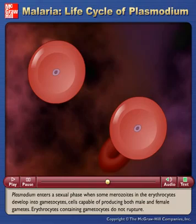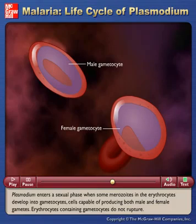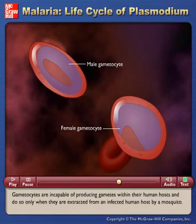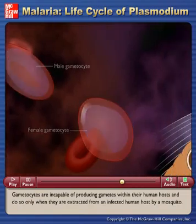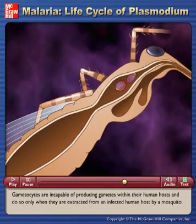Plasmodium enters a sexual phase when some merozoites in the erythrocytes develop into gametocytes, cells capable of producing both male and female gametes. Erythrocytes containing gametocytes do not rupture. Gametocytes are incapable of producing gametes within their human hosts and do so only when they are extracted from an infected human host by a mosquito.